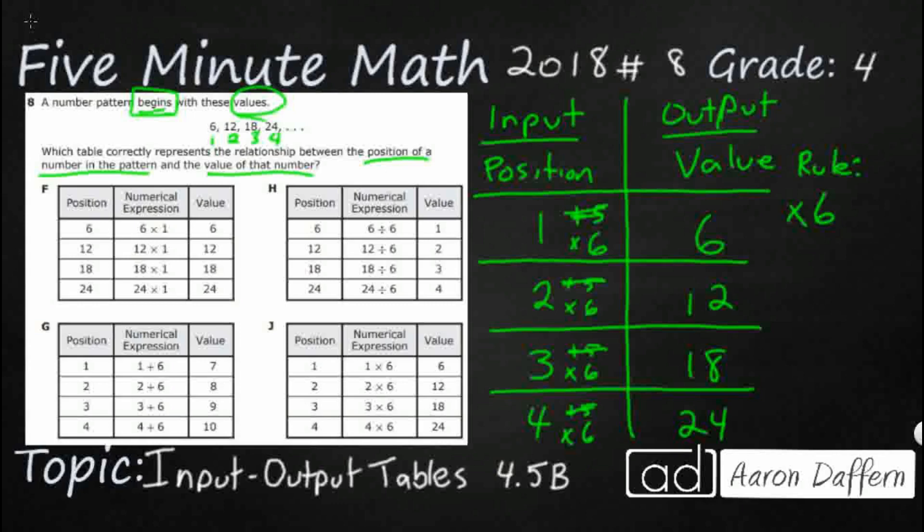Look at F. Now, F looks wrong, but it also has something that's right. So take a look at their values: 6, 12, 18, 24. So they correctly copied down those values. That's the ones that we have right here.